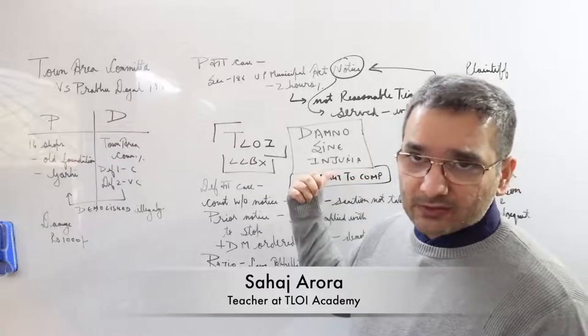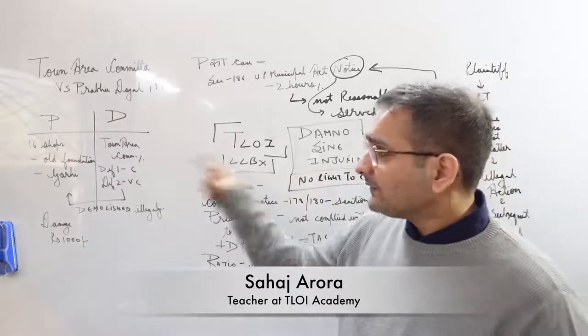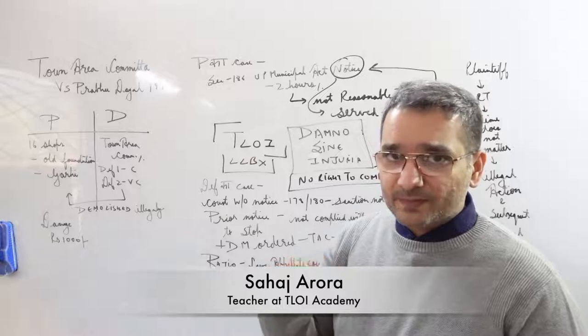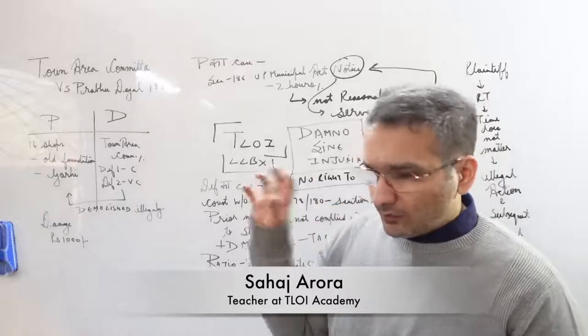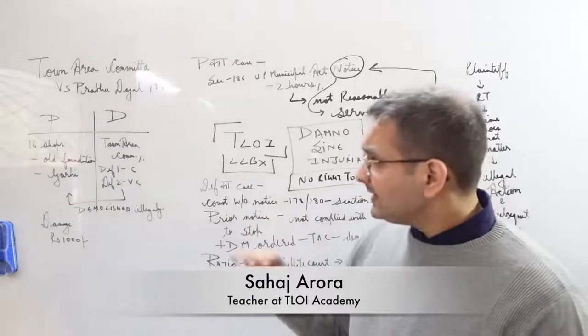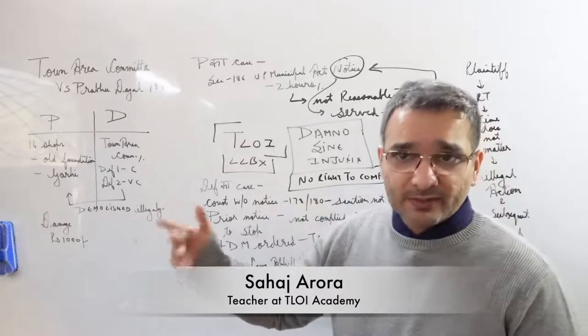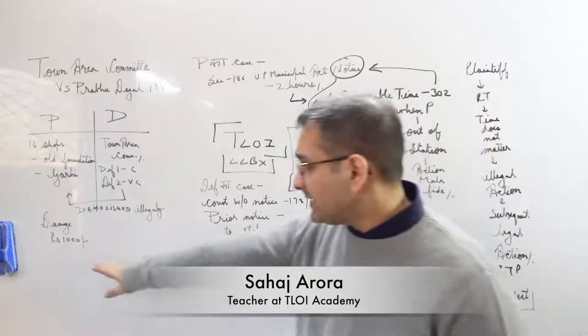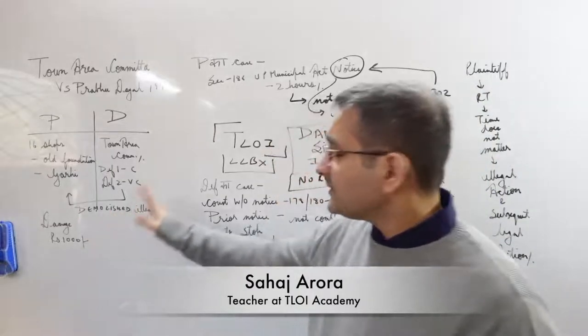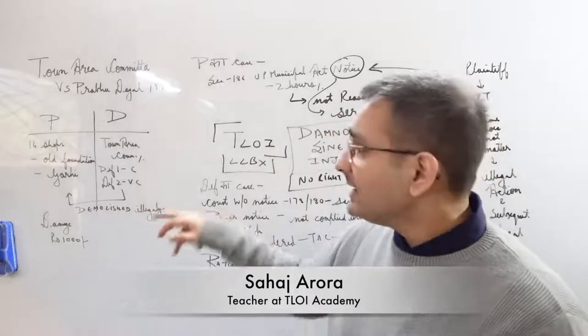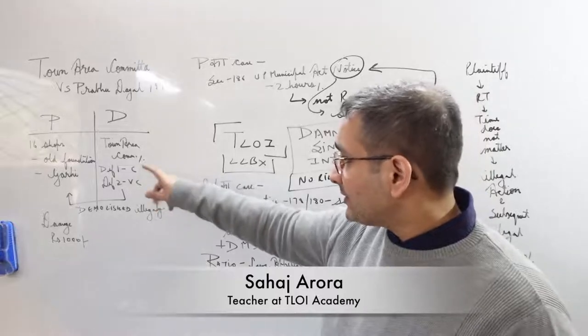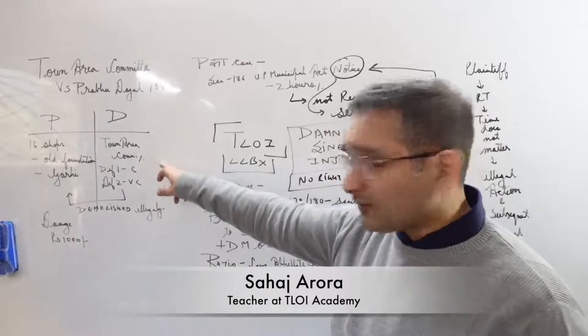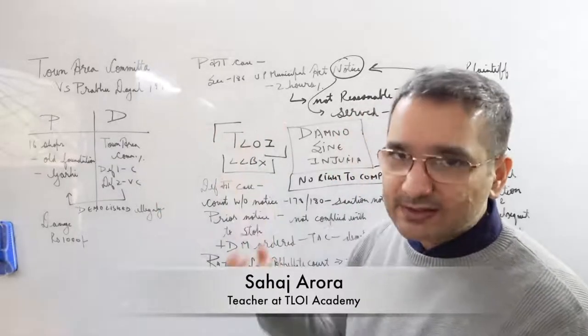We are being taught this so we understand this concept very well. The plaintiff constructed around 16 shops at a building or rather old foundations of a building called Gadi, and then the town area committee demolished it because it was an illegal construction. So he sued them for damages, saying I have suffered a damage of 1,000 rupees. You have demolished my shops illegally. Defendant number 1 and defendant number 2 were chairman and vice chairman, and the main defendant was the town area committee, basically the municipal authority.